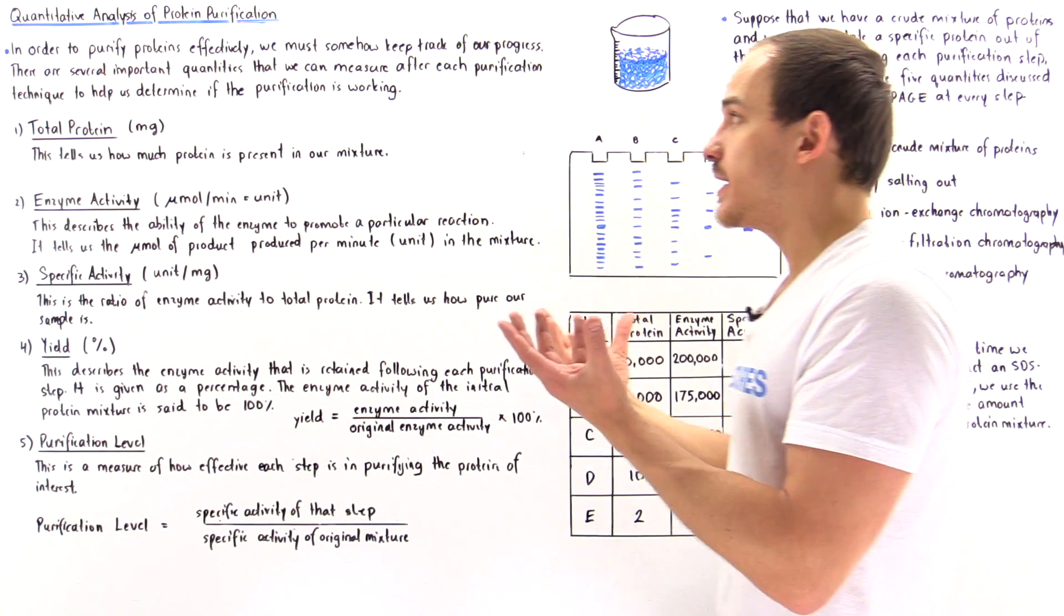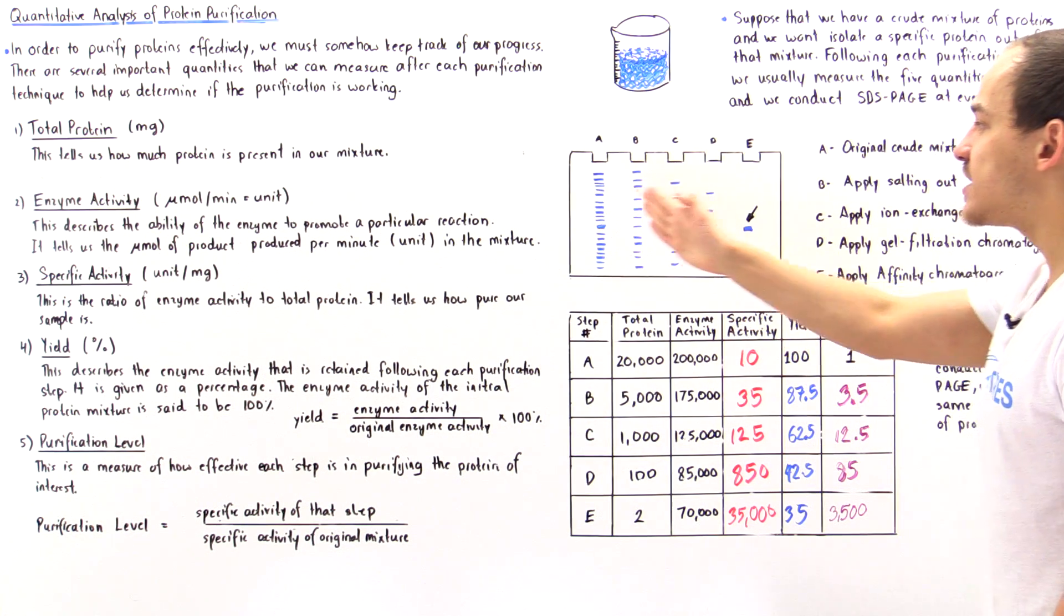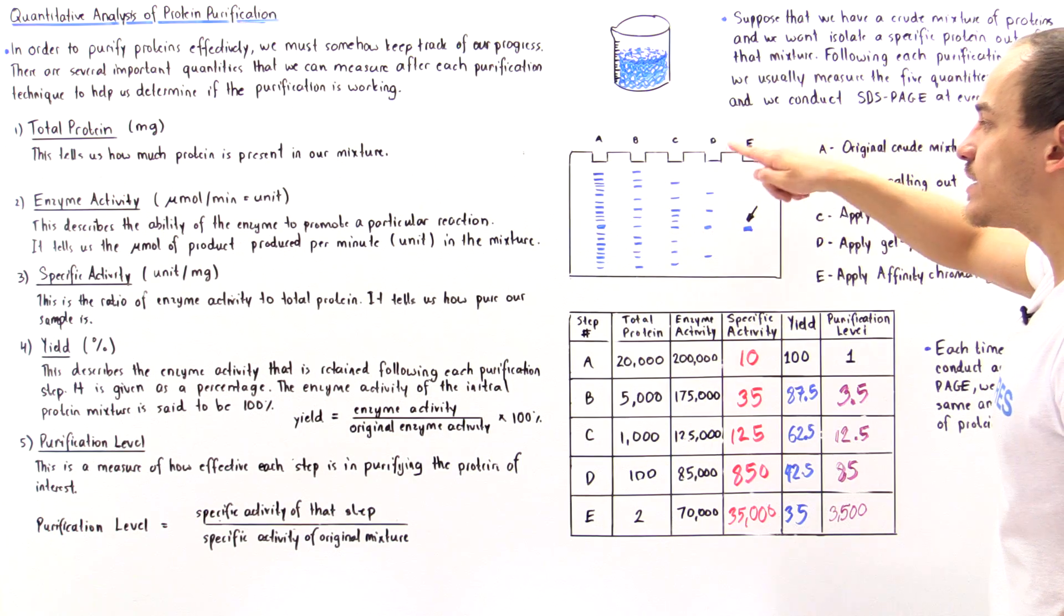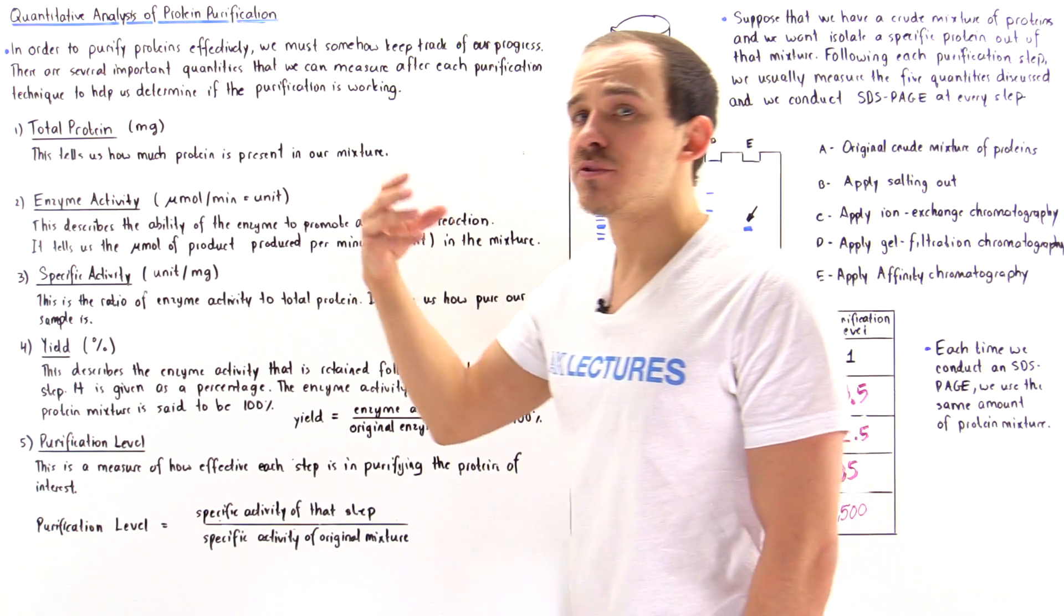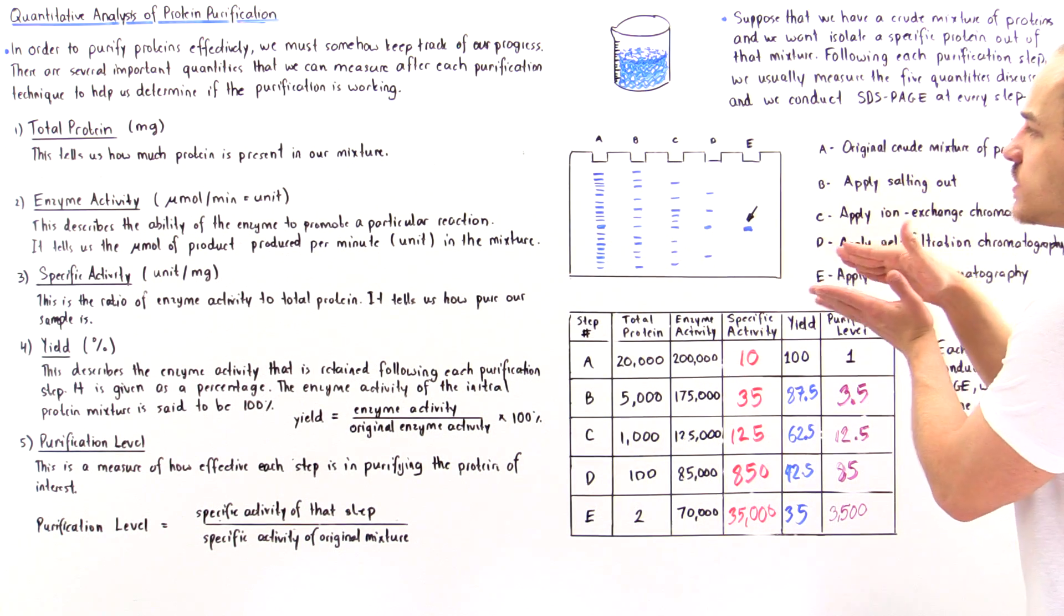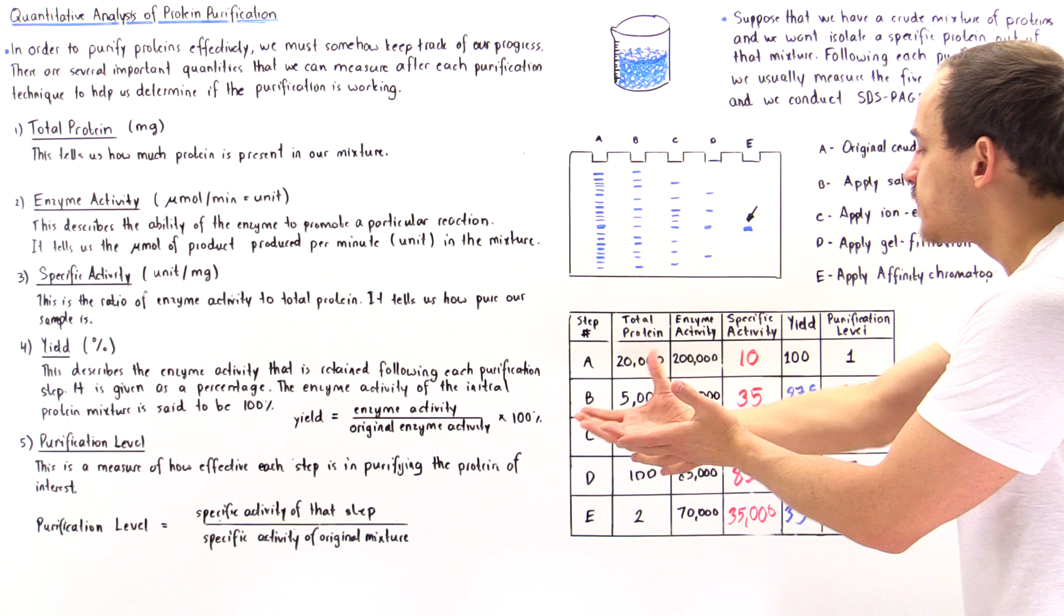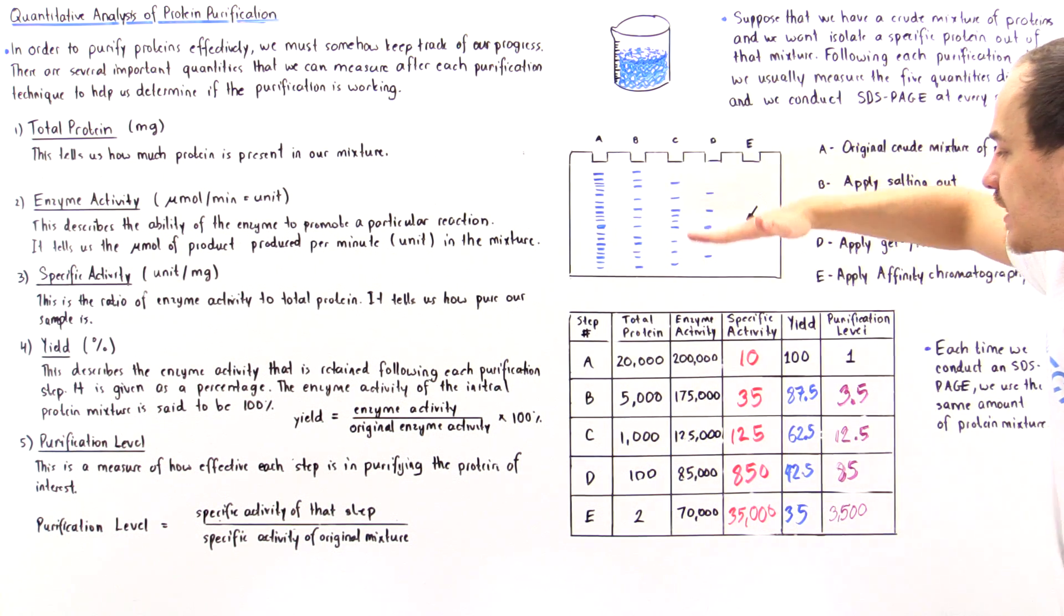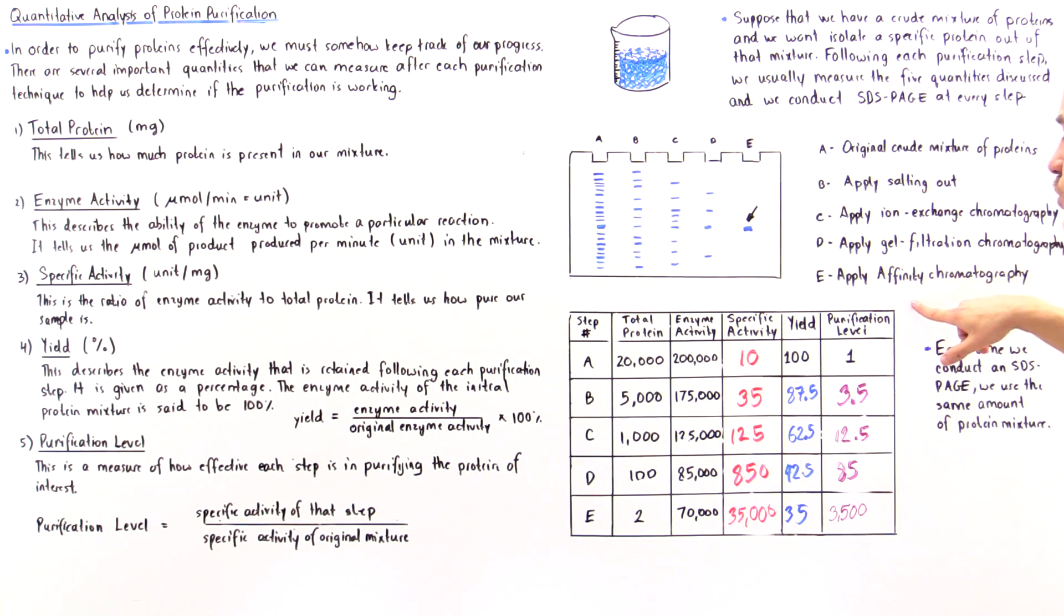Normally as we go from A to E, the number of bands should decrease, which means we're getting rid of unwanted proteins and focusing on the protein we want to study. That is confirmed by these measurements because as we purify the sample, the specific activity has to increase, and so should our purification level.